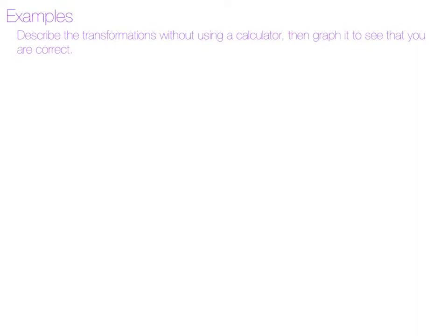We're going to look at some examples. The instructions are to describe the transformations without using a calculator, and then graph it to see that you are correct. Our first example is f(x) equals the square root of (x minus 2). I don't have a negative in front, I don't have a stretch or shrink, I don't have a vertical shift, but I do have a horizontal shift inside the radical.